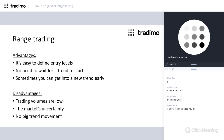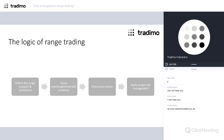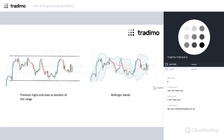What is the logic of actions in a range? The general logic is: firstly we define the range, and for that we need to see the price trading between some horizontal support and resistance levels. Next, we check for overbought and oversold conditions of the market. Then we check what is happening with price action. On the basis of all of this, we apply risk management and open a trade.